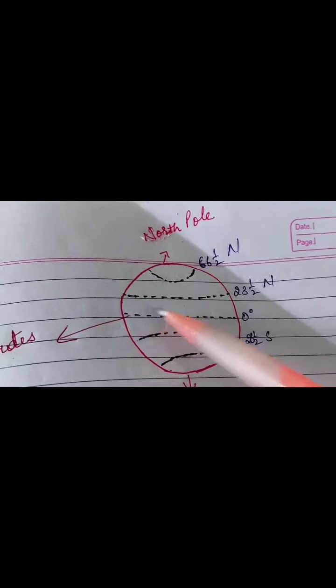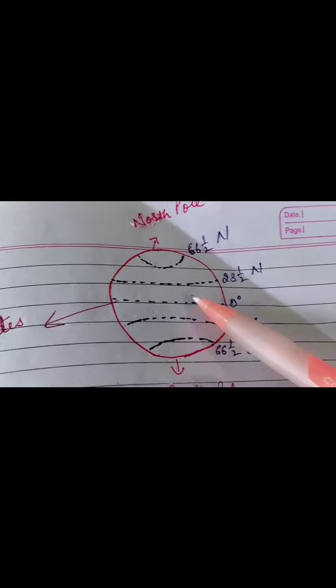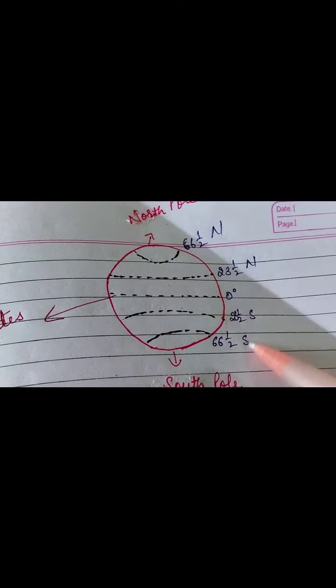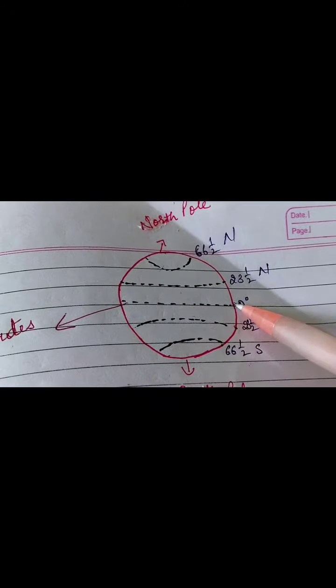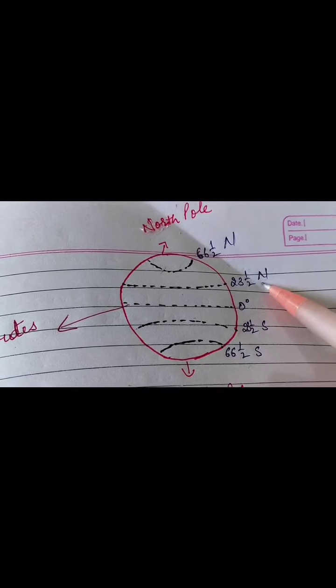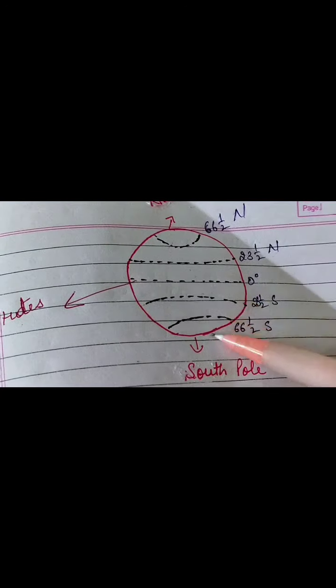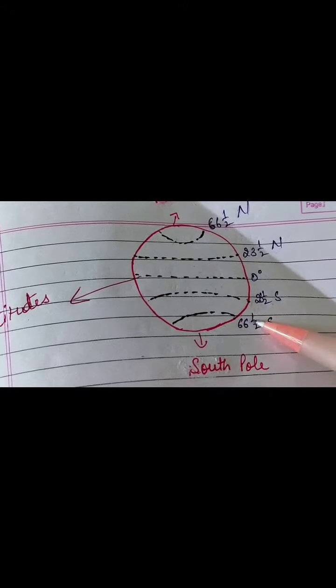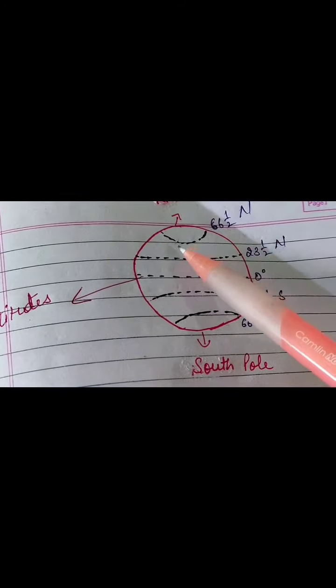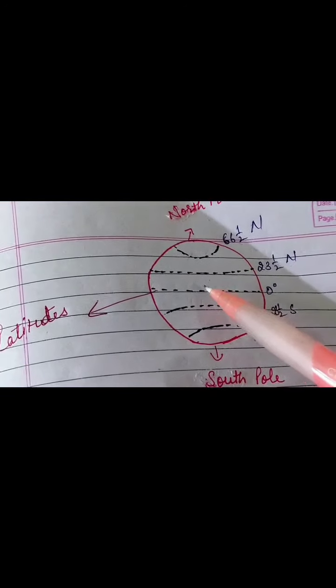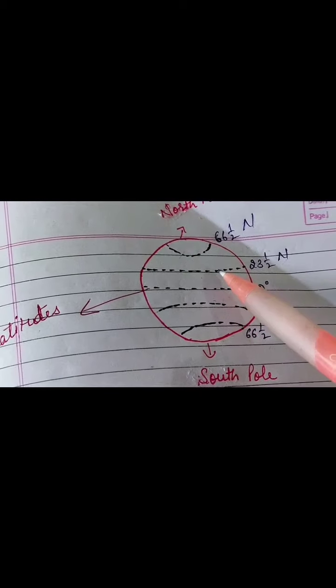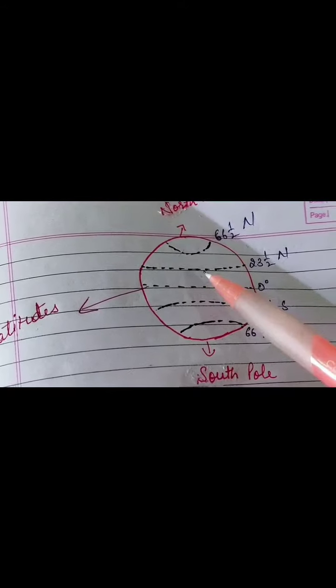Let's see here. You are able to see these lines parallel to the north pole and south pole — these lines are called lines of latitude. These are parallel to each other. This is your equator. Above the equator, this is 23 and a half degrees north, 66 and a half degrees north. Below, parallel to the south, we are having 23 and a half degrees south, 66 and a half degrees south. These are imaginary lines only — we have made them to locate a country on the world.